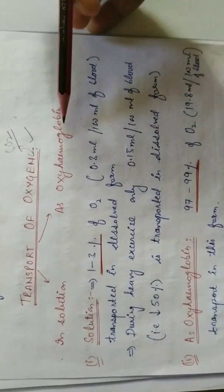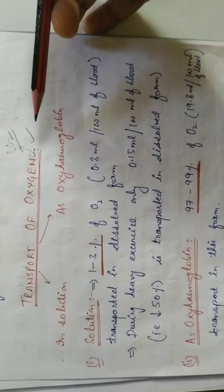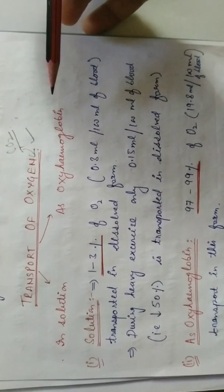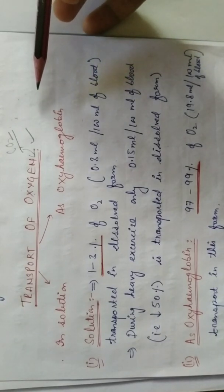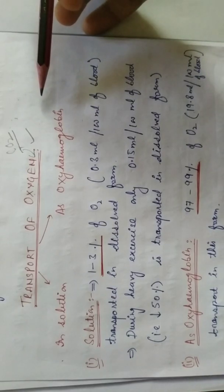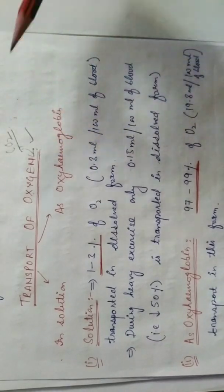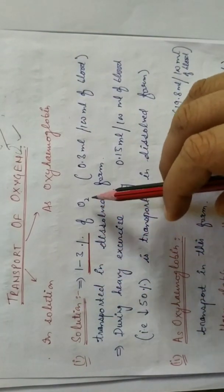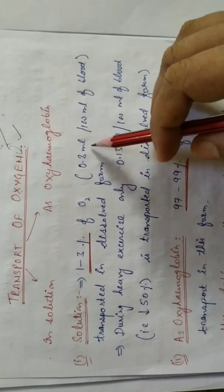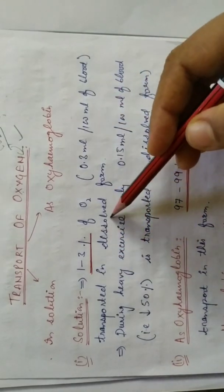We are discussing how the oxygen is transferred to the blood, taking oxygen from the lungs. The oxygen that comes from the lungs is carried to the body cells. Approximately 0.3 ml in each 100 ml of blood is transported in dissolved form.